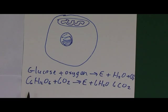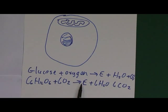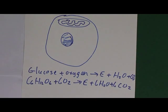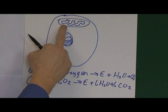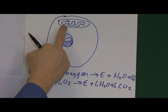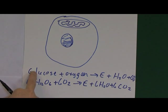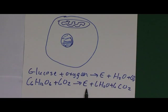So this is going on inside the mitochondria: glucose plus oxygen gives energy plus water plus carbon dioxide. The powerhouse of the cell. This is the site of respiration — cellular respiration. Respiration means the utilisation of oxygen to produce vital energy.